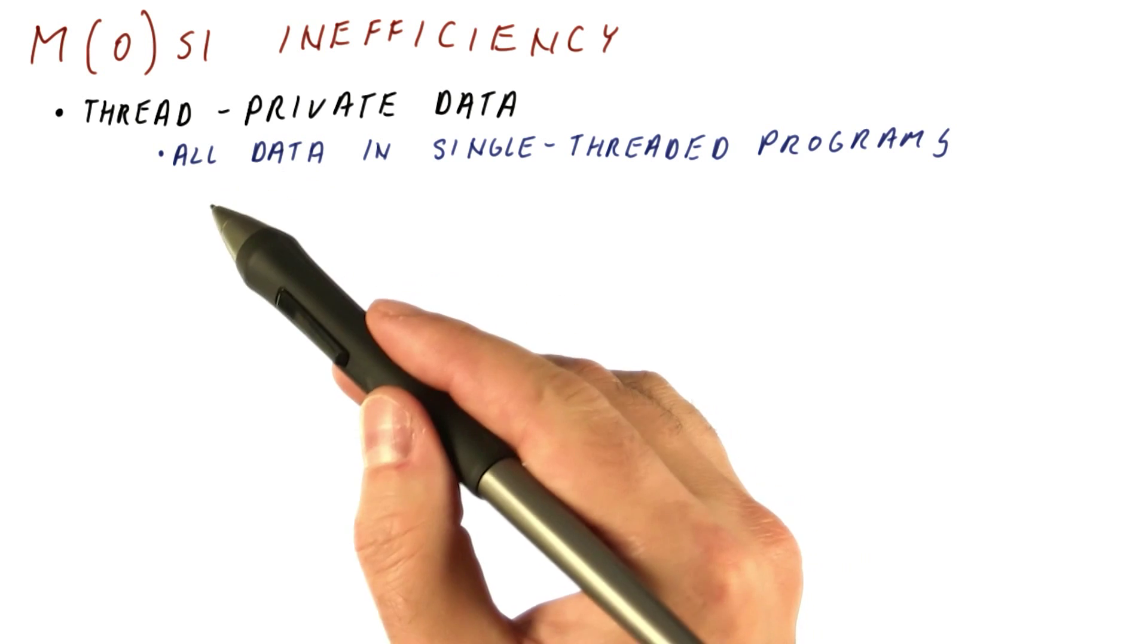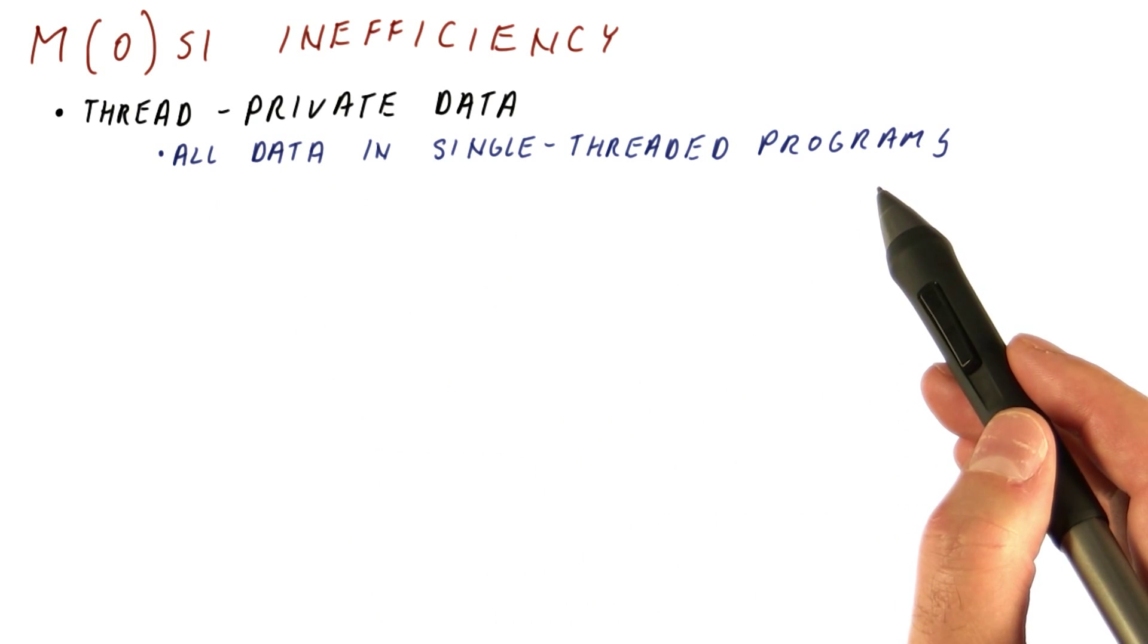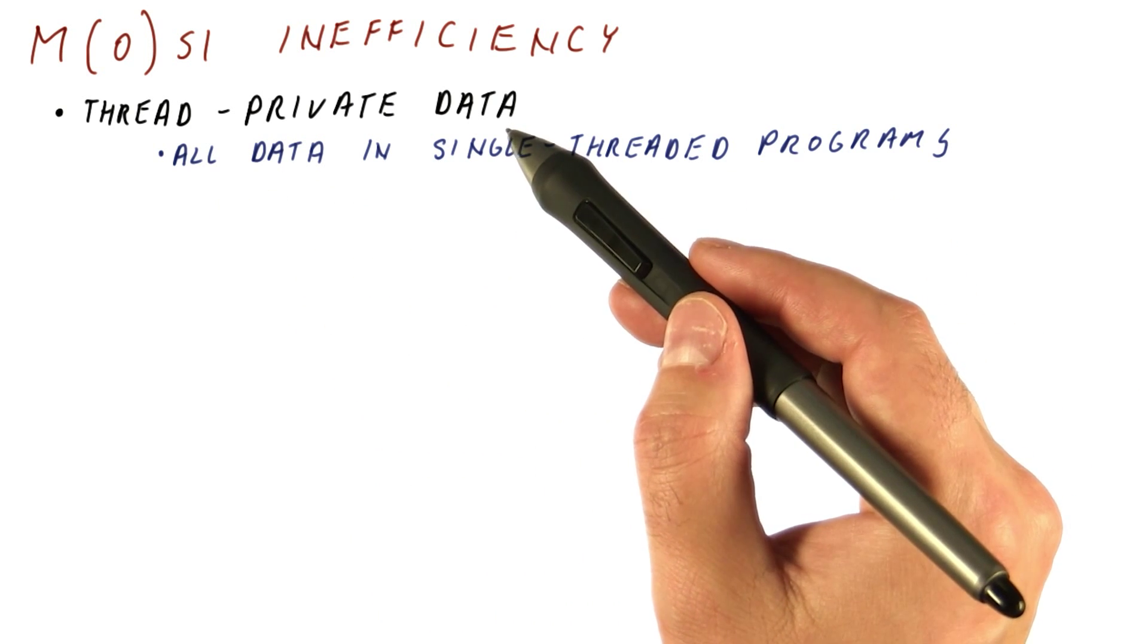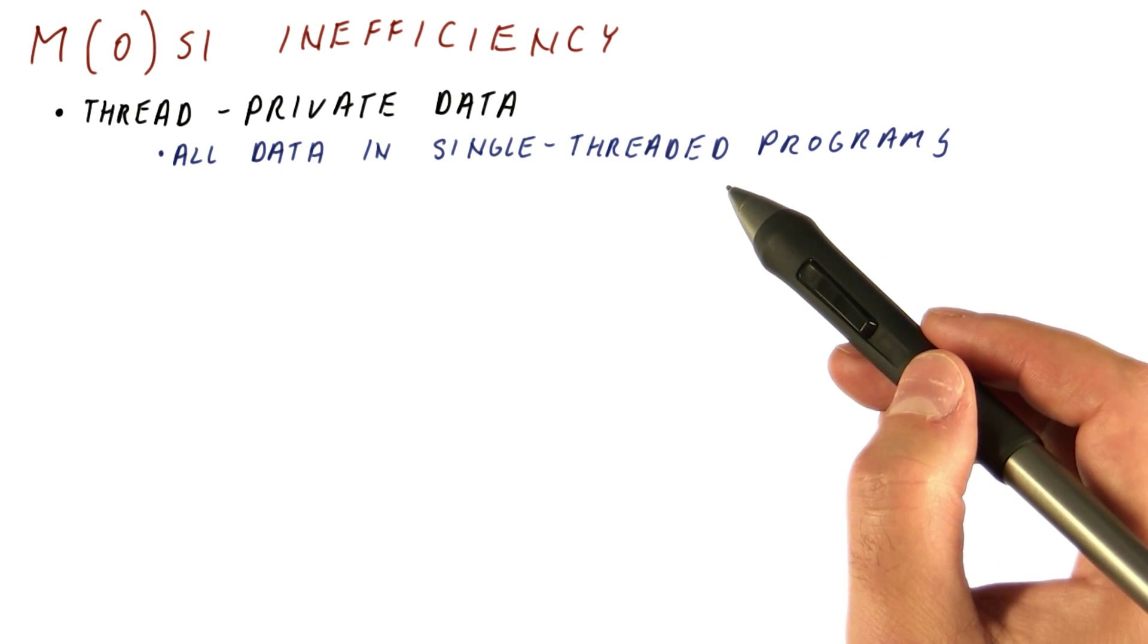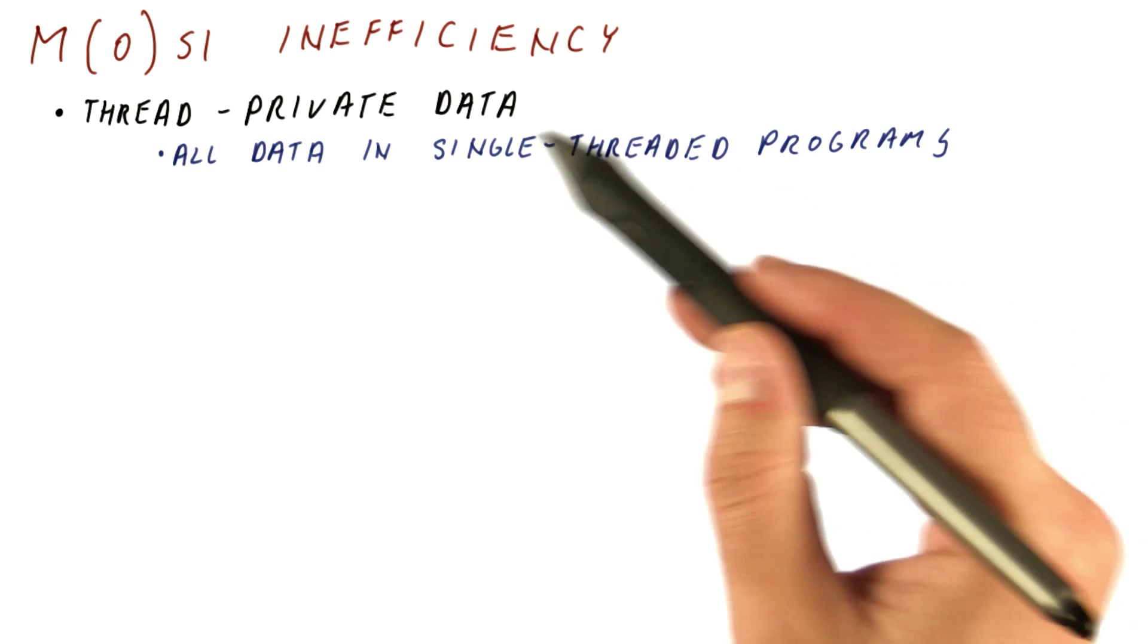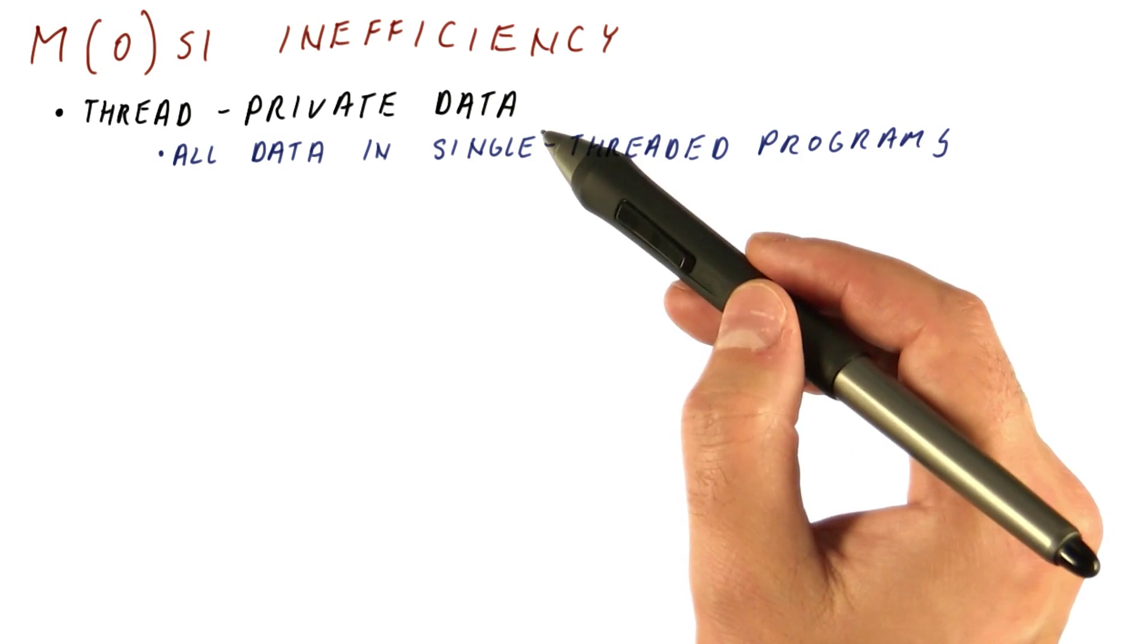Thread-private data is, for example, all data in a single-threaded program. So if we have a four-core processor running four single-threaded programs, they never share any data. All of the data in these programs is thread-private.